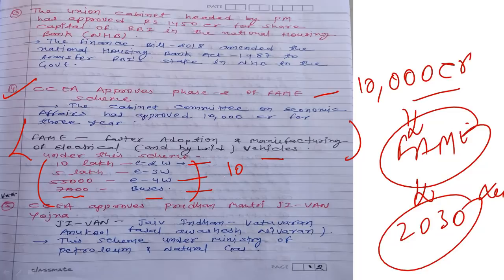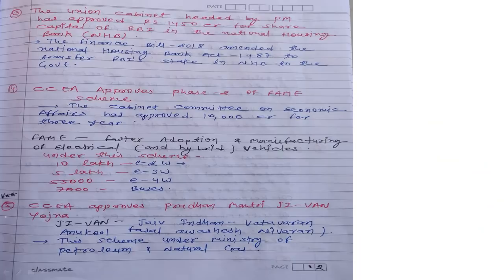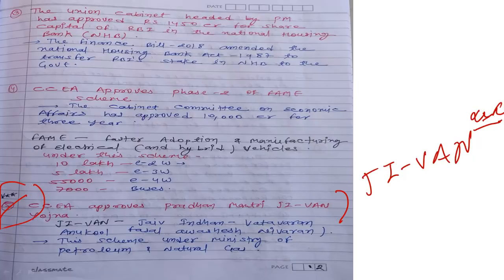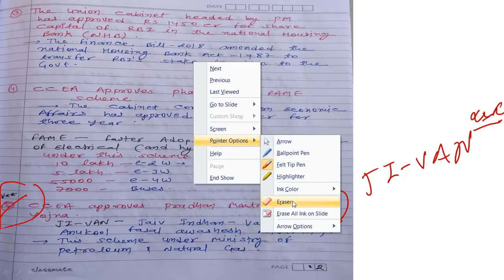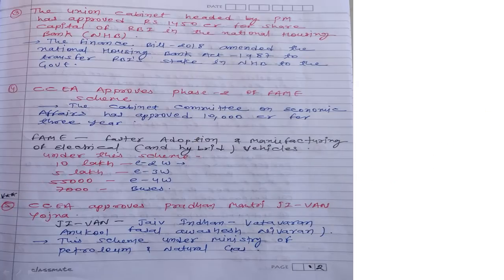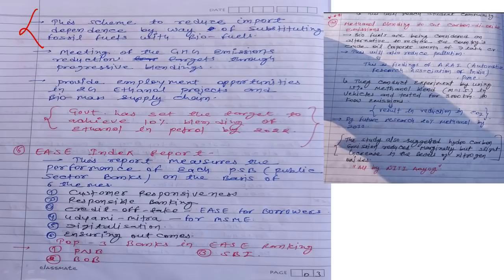Fifth current affair: CCEA approved the Pradhan Mantri GOBAR-DHAN Yojana — a three-star important scheme for examinations. GOBAR-DHAN stands for Galvanizing Organic Bio-Agro Resources Dhan. This scheme is under the Ministry of Petroleum and Natural Gas and aims to reduce import dependence by substituting fossil fuels with biofuels.